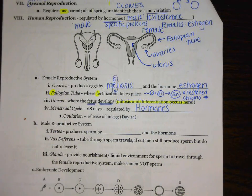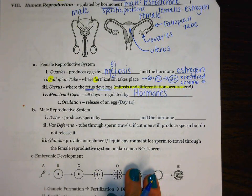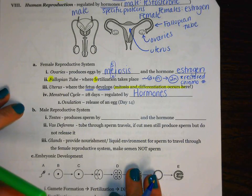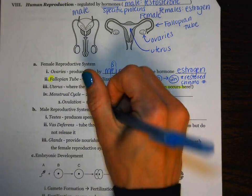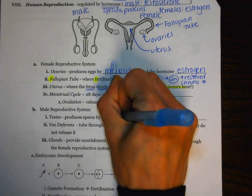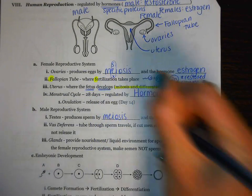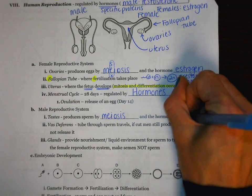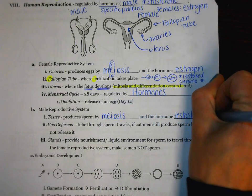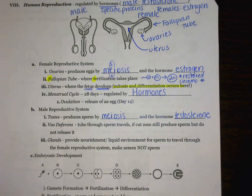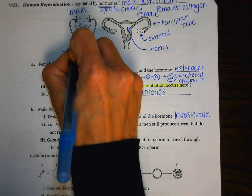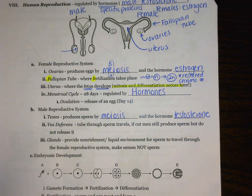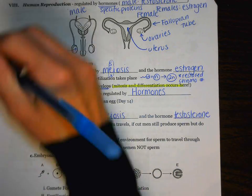The next body system we have to deal with is the male reproductive system. The male reproductive system makes sperm, and the place where it's going to make sperm is going to be in the testes. Just like the eggs, sperm is made through the process of meiosis. The male hormone is called testosterone. The testes, if we're looking at the picture, are going to be the two circles on either side of the male reproductive system.